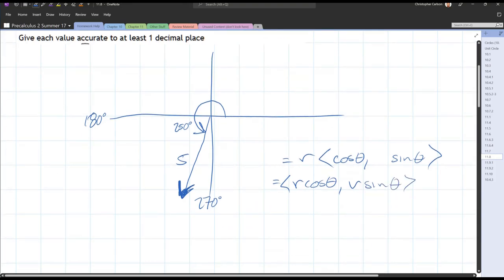Now we're just going to plug in these different values. R is five. Five cos two fifty. Five sine two fifty.